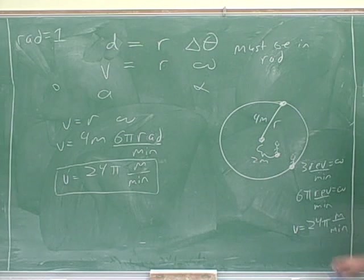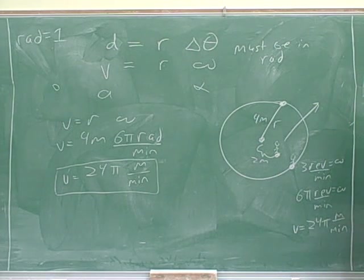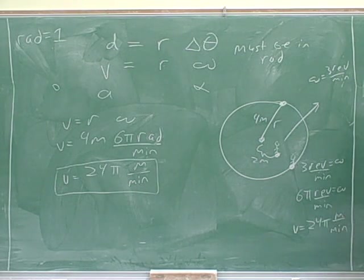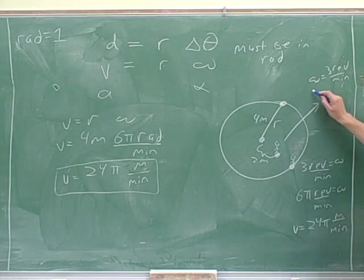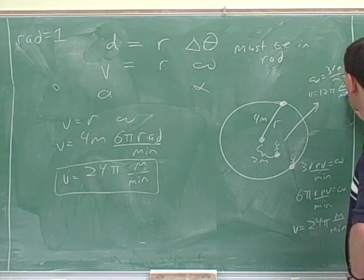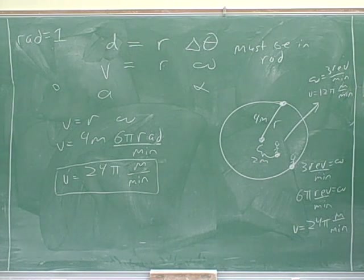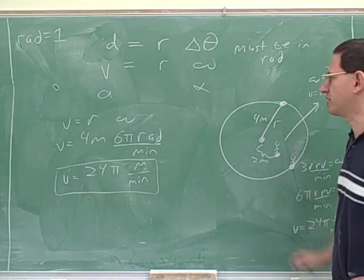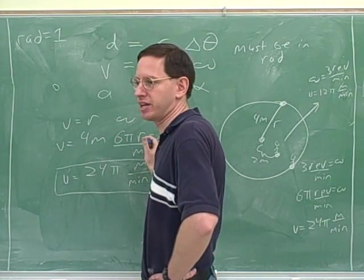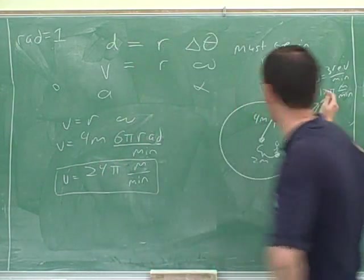Now let's figure out what V would be for this person. Good. That's right. This person has an R of 2 meters. They're 2 meters from the center. So now instead of doing 4 times 6 pi, we would do 2 times 6 pi. And then the radians would disappear. So we end up with 12 pi.